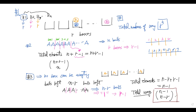So for part three — no box can be empty — the answer is C(n minus one, r minus one). We use the same stars-and-bars partition idea, but because no box can be empty, we subtract r balls first (one per box), leaving n minus r balls to distribute freely among r boxes with r minus one bars.